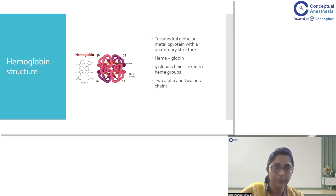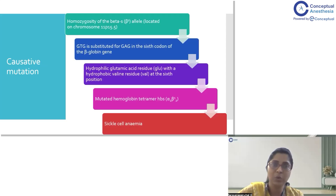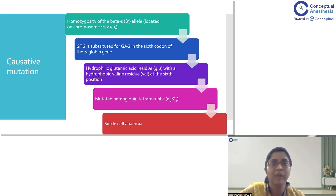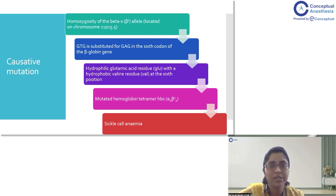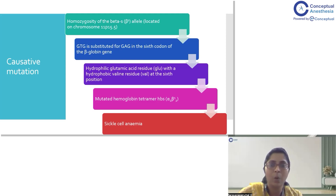The causative mutation in sickle cell anemia can be homozygous or heterozygous, wherein the patient can also be a carrier. The GTG codon is substituted for GAG at the sixth codon of the beta-globin chain on chromosome 11. This means a hydrophilic glutamic acid residue is replaced by a valine residue at the sixth position of the beta chain. This mutated hemoglobin, HbS, is what causes sickle cell anemia.